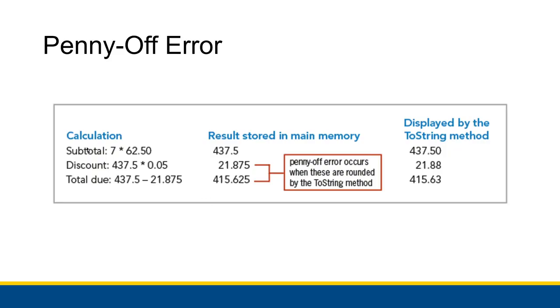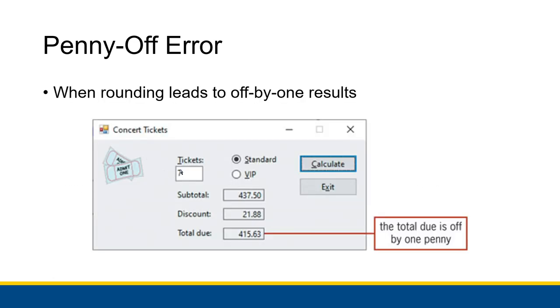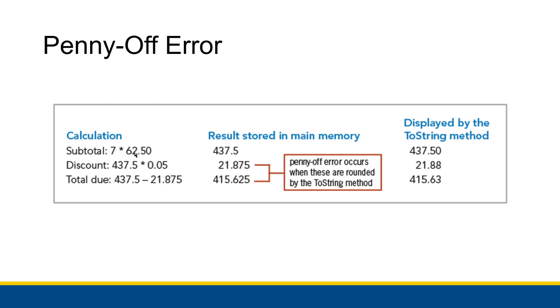So now in this problem we calculated the subtotal. We have tickets right here. Each ticket is 62.50. The user is trying to buy 7 of them. 7 times 62.50, that's how you get the subtotal: 437.5. When we display that in ToString with C2 we get 437.50.